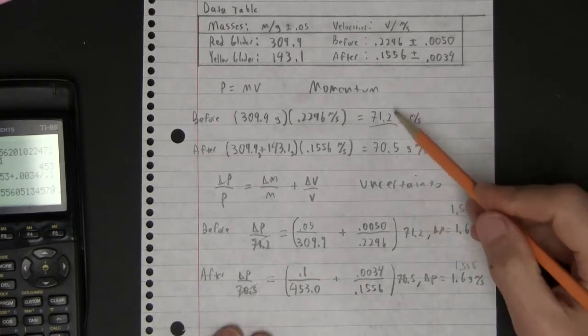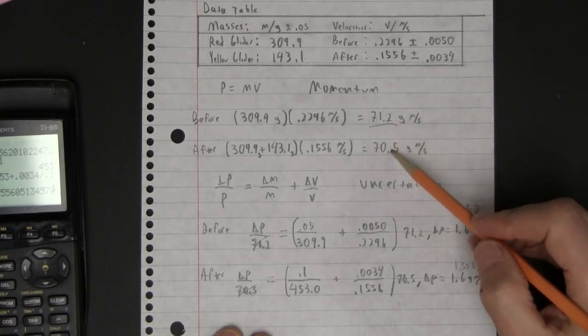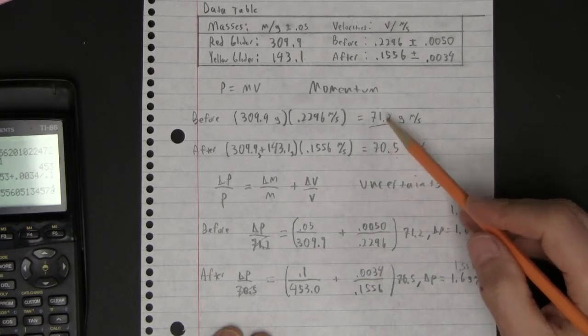Conserved means that these two numbers, even though they aren't exactly the same, were supposed to be the same.